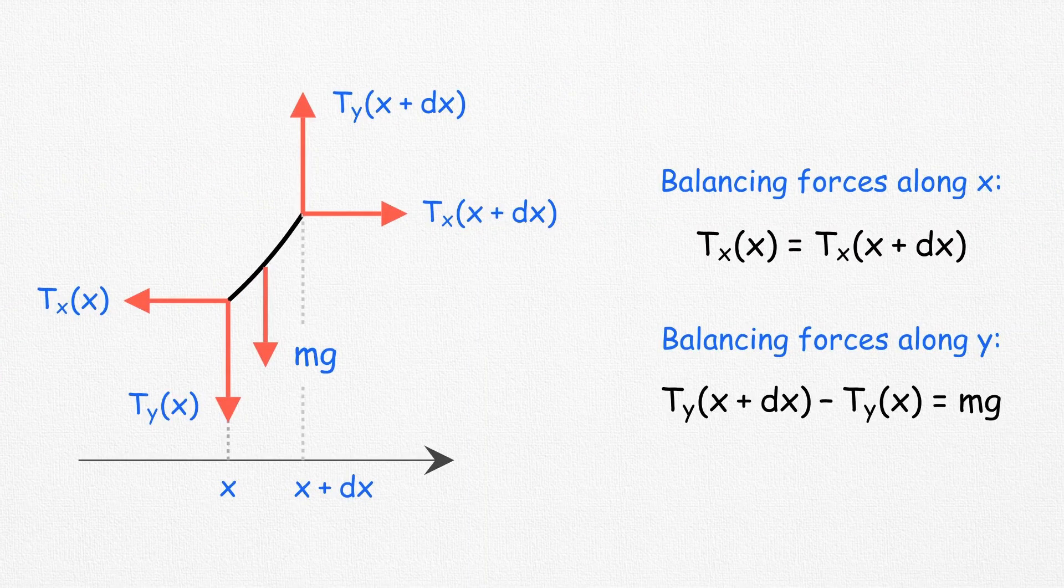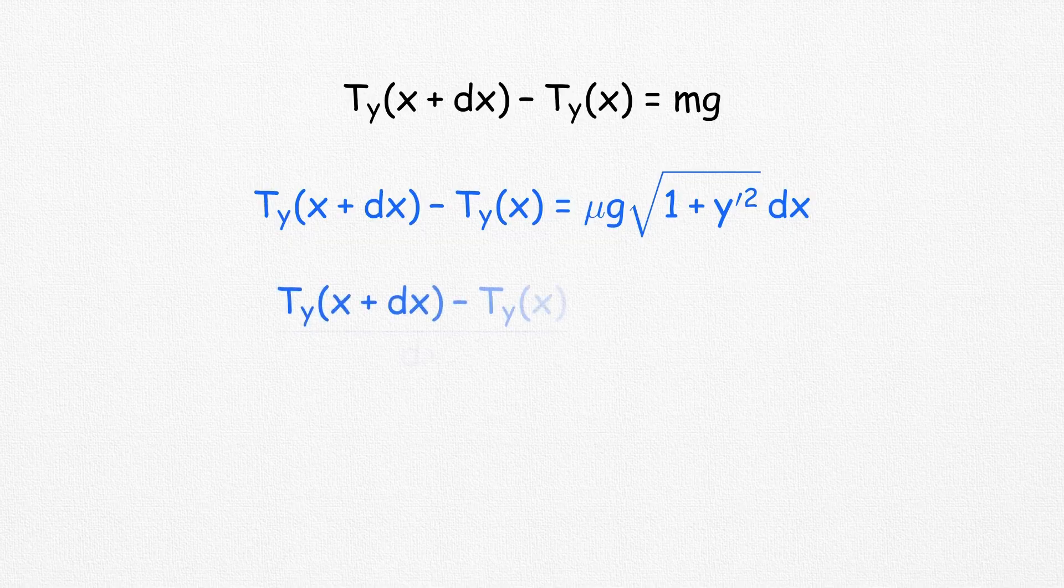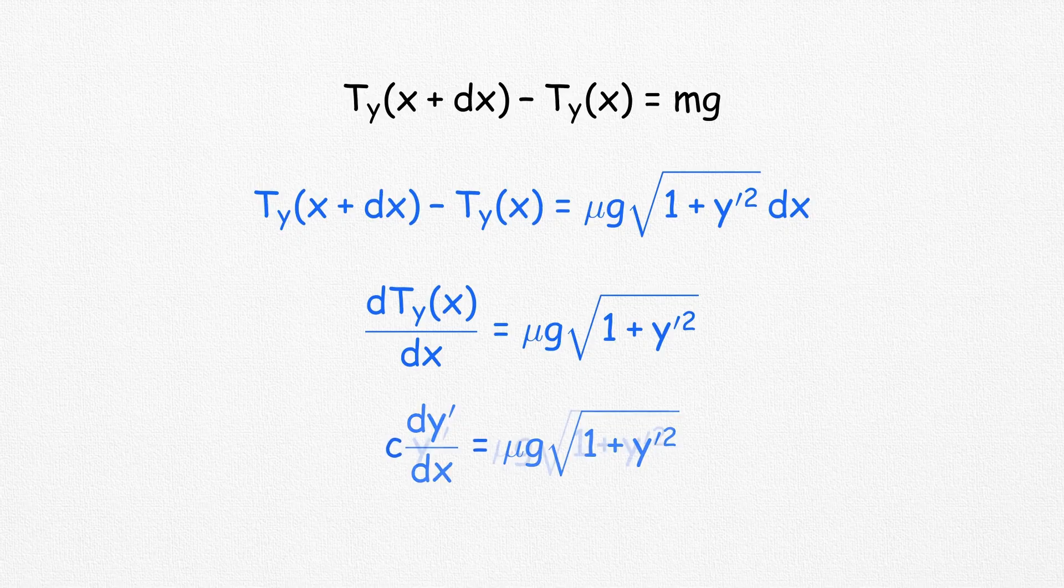Substituting the expression for m into our second equation and rearranging a little bit, we obtain this. On the left-hand side, it's simply the derivative of tension's y component. This is nothing but the derivative of c times y', and that's c times y''. Combining all the constants, we get this differential equation.